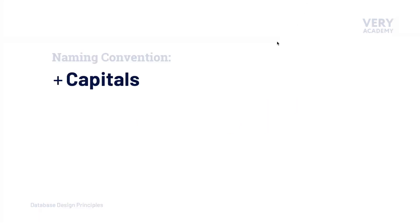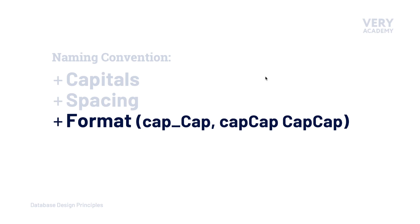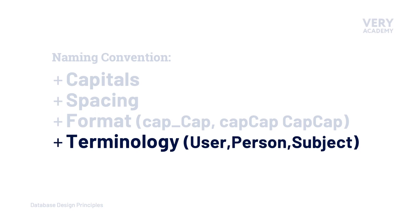A naming convention might include, for example, defining where capital letters might be used in names, or potentially where spacing might be considered or used. In addition to that, you may have a rule which defines how you present the names. There are many formats in which you can present names, and in this tutorial I will highlight some of these different formats. The terminology that we use is also important. If we define that a user is going to be called 'user' and not 'person' or 'subject', then we need to make sure that we're consistent throughout our database and name things appropriately and consistently.